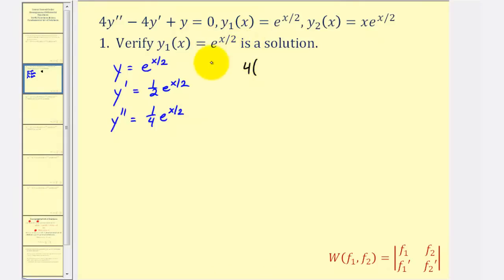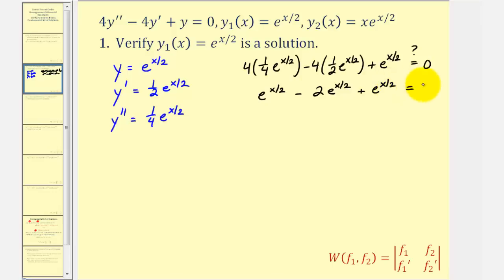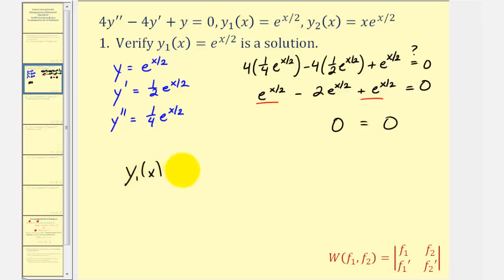Now substituting into the original differential equation, we have four times y'', which is (1/4)e^(x/2), minus four times y', which is (1/2)e^(x/2), plus y, which is e^(x/2). We want to verify this equals zero. This gives e^(x/2) minus 2e^(x/2) plus e^(x/2) equals zero. Adding the first and third terms gives 2e^(x/2), and minus 2e^(x/2) gives zero. So y₁(x) is a solution.